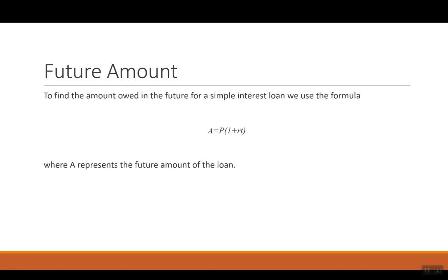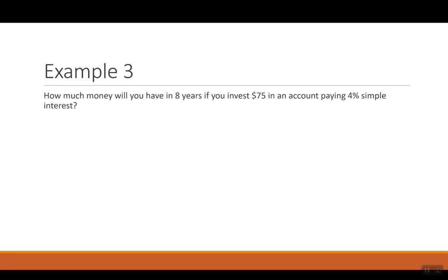Sometimes we may want to find the future amount. Mostly this is talking about investment, or how much do you owe in the future. To find the amount owed in the future for a simple interest loan, we use the formula A equals P times 1 plus RT, where A represents the future amount of the loan. This could be an investment as well. If I'm trying to figure out how much interest we will earn on top of the amount we put in, this formula will tell me what we will have in the future.